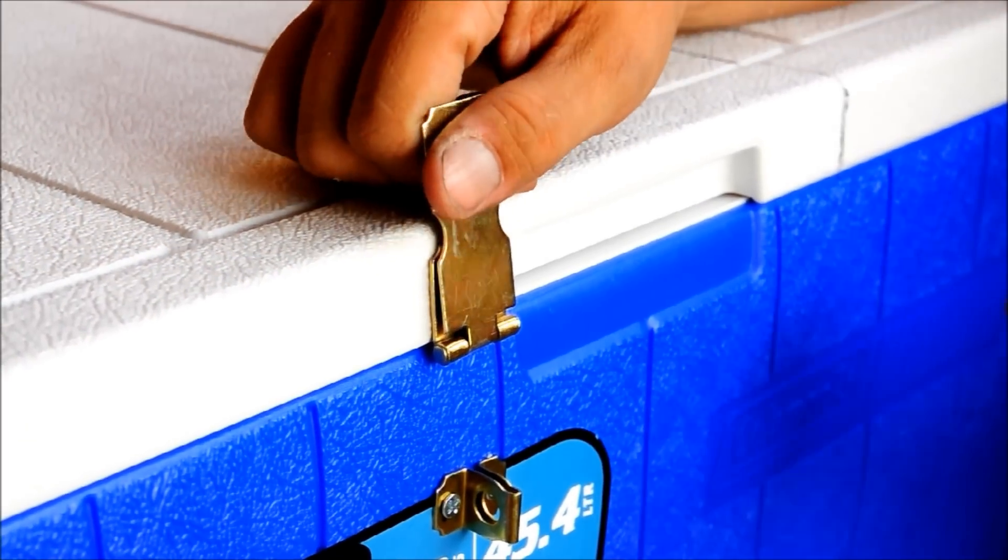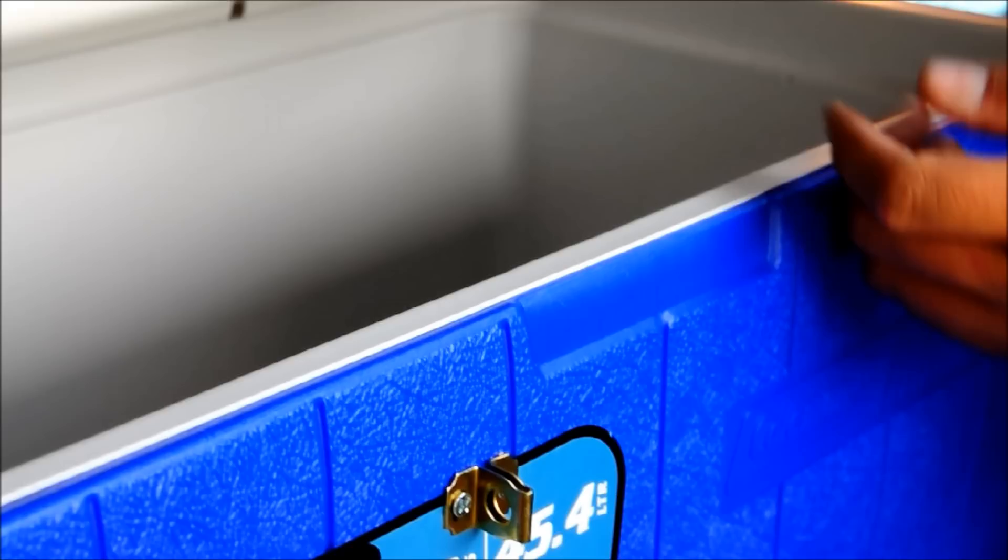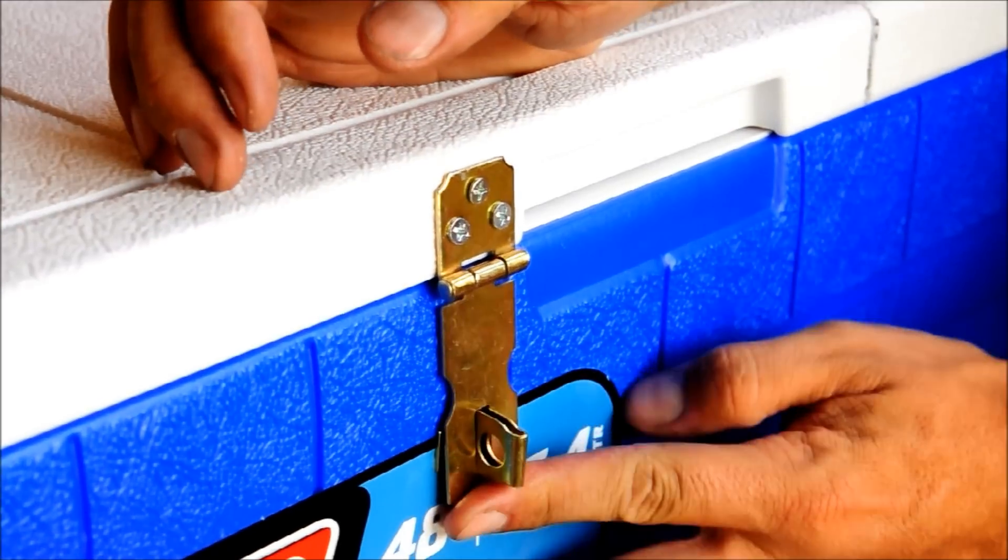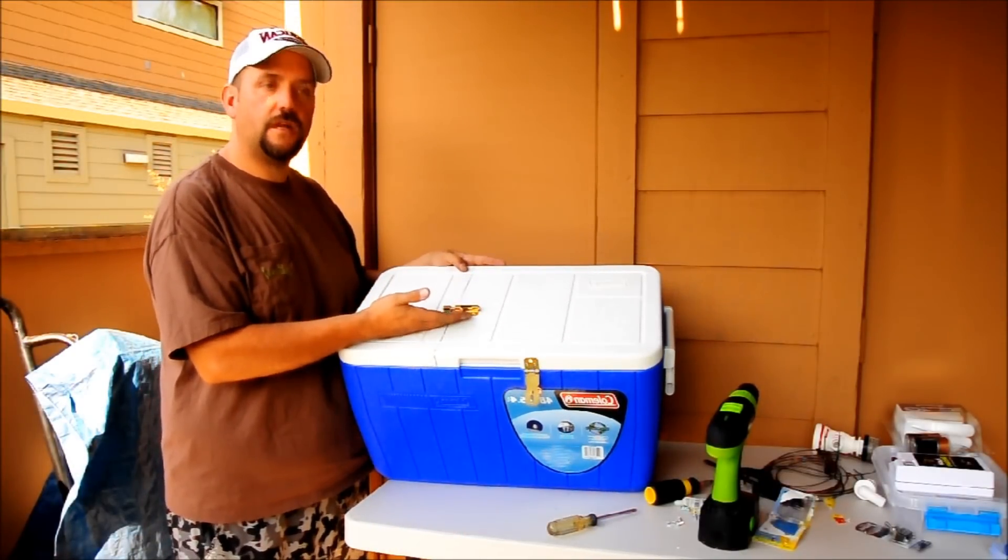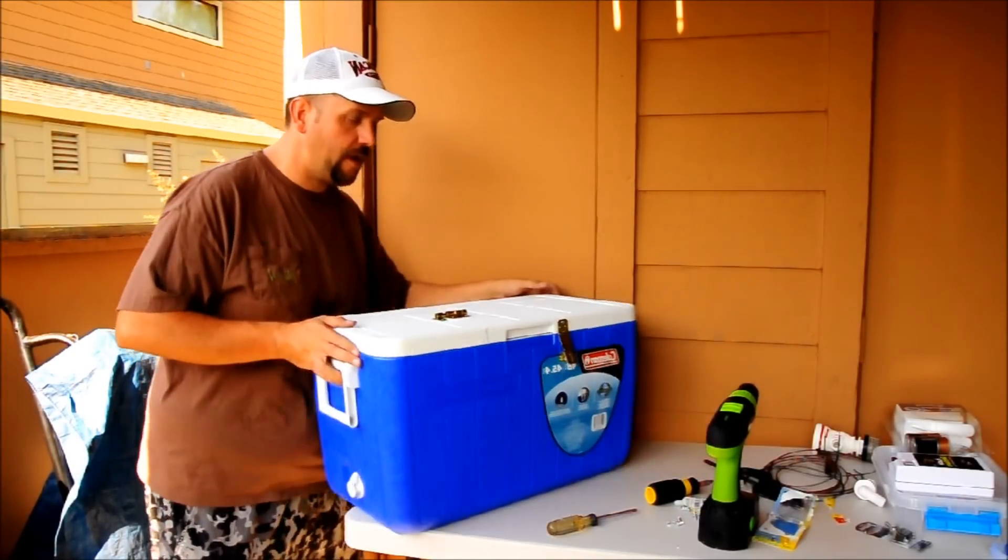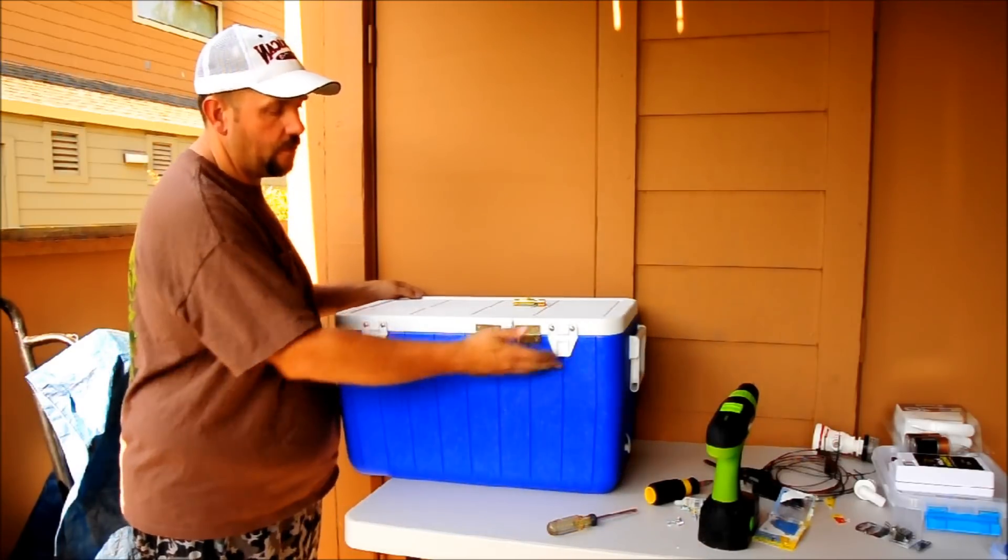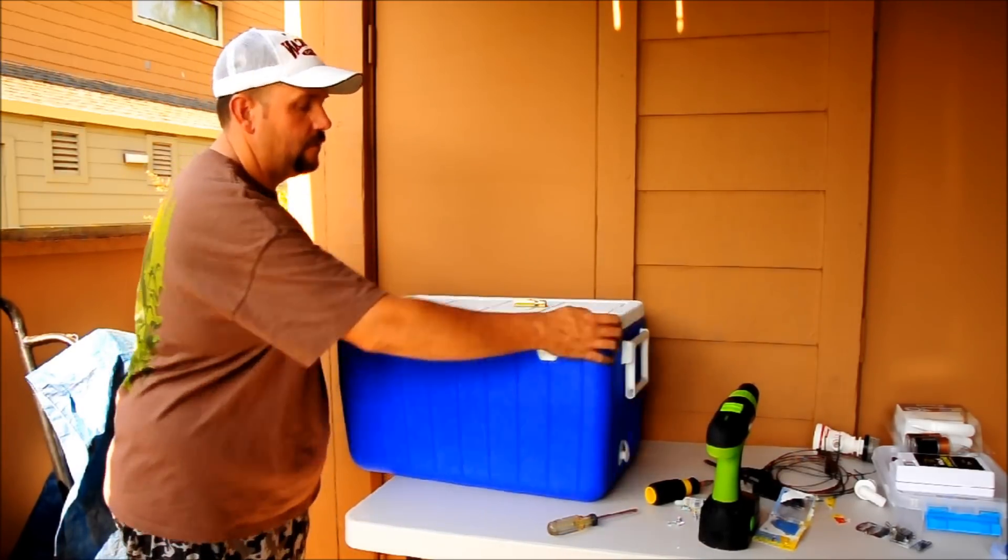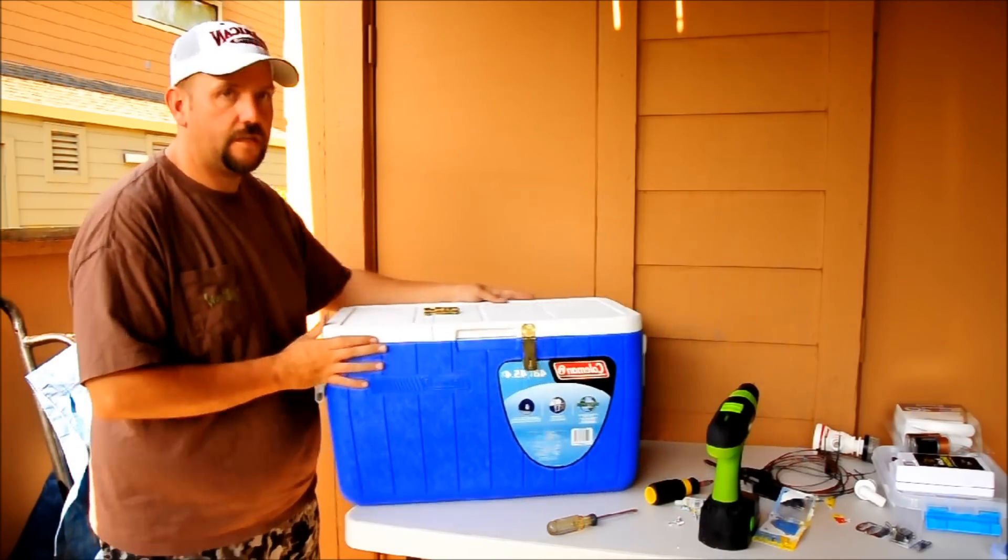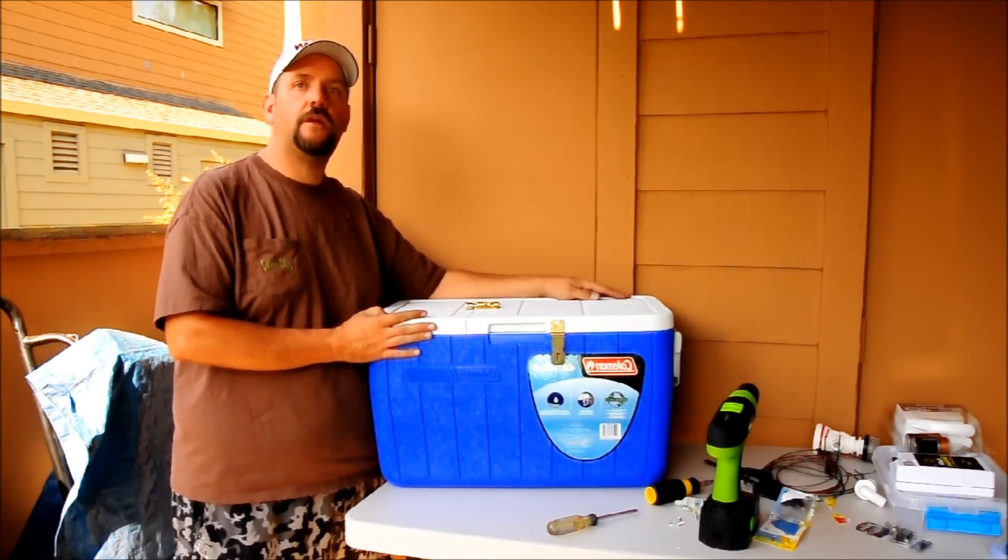We now have our latch attached. The lid comes up, the latch goes down. We've got our latch on the front, we've got our barrel bolt on the top and on the back, our extra hinges to keep the lid in place. After this, we move on to putting in our pump.